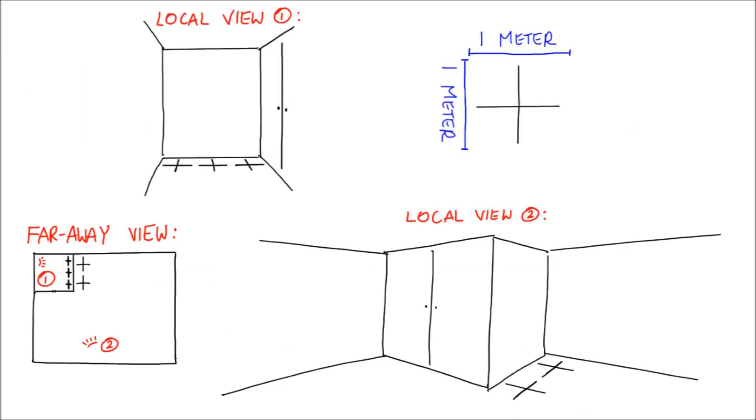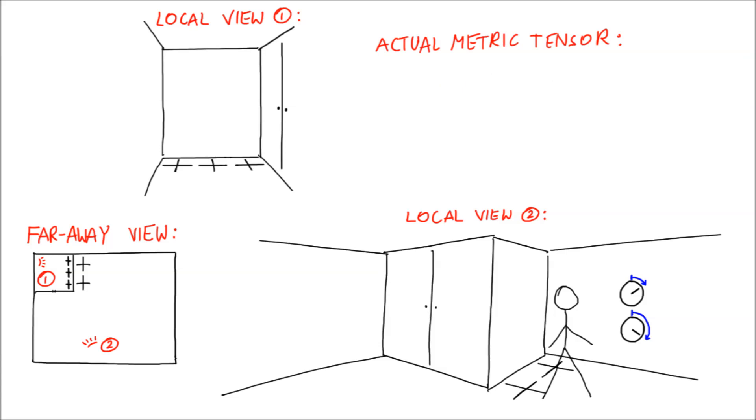But that's not all. In addition to compressing space, the wardrobe also speeds up time. That is, you can synchronize two clocks, take one and go into the wardrobe, wait and walk out. As a result, the clock you took with you measured more time than the clock you left outside.